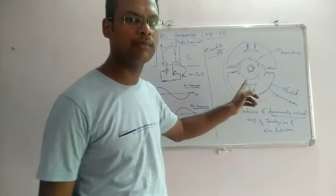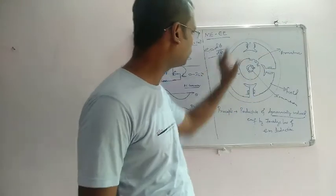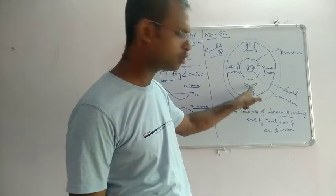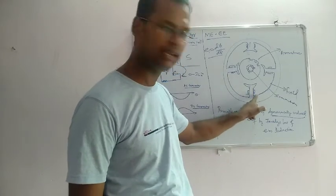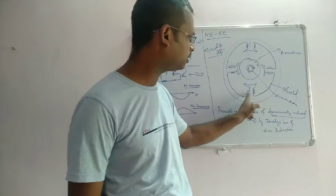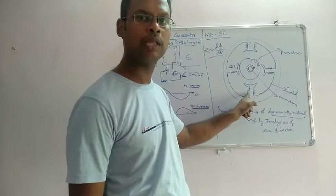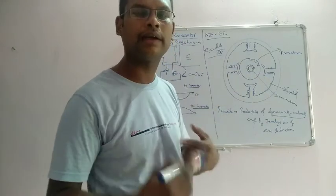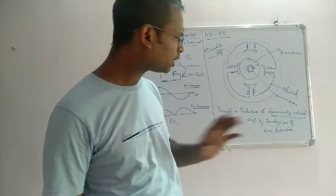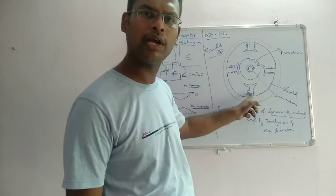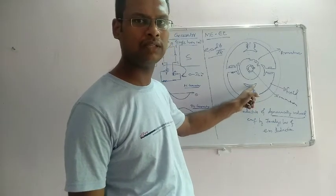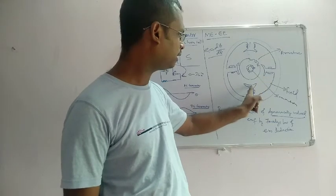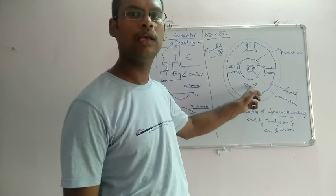The DC generator parts include the pole and pole shoe, and the field windings. The field windings are supplied with current to produce magnetic flux. The pole has an inner end and the pole shoe has a specific shape, which helps distribute the magnetic flux to the rotating armature.